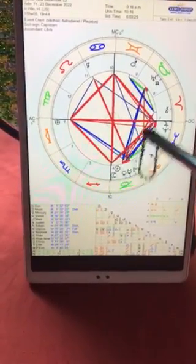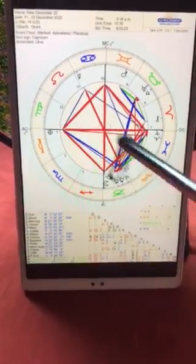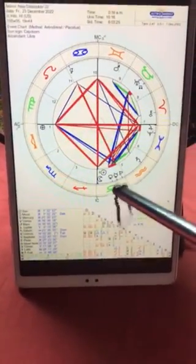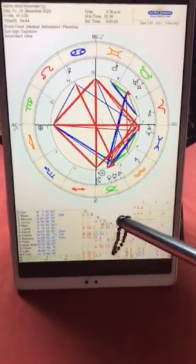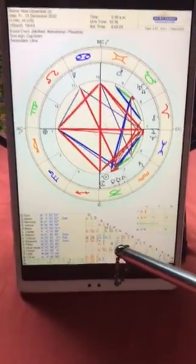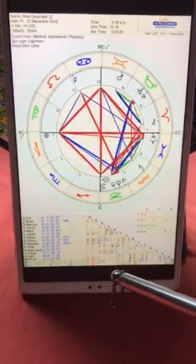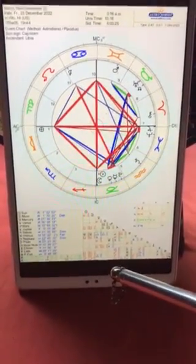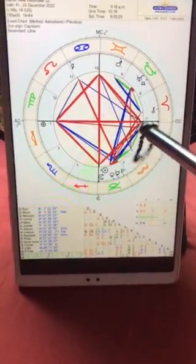See, you see here a square. As I said before, all the red lines, oppositions or squares, they are challenges and we need them to evolve. All what is blue, that's gifts, that's where the energy flows easily. So actually the east, the...